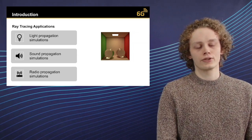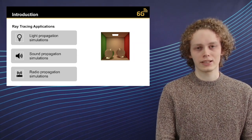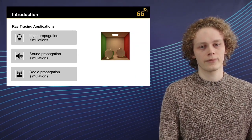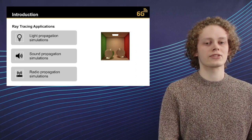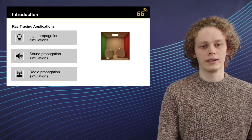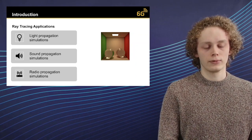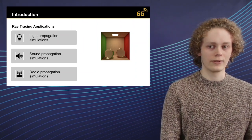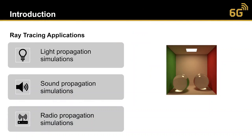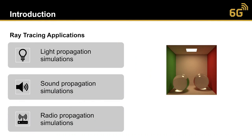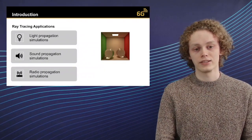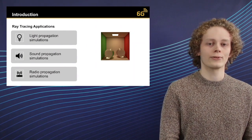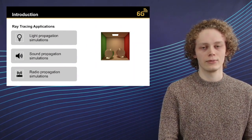First I'll give you a short introduction to raytracing and how it's utilized in different fields. The most famous application is in light propagation simulations — we have applications such as movies, and here on the right-hand side you can see the famous Cornell box, generated using raytracing, showing very realistic simulations. We can also use this for sound propagation simulations, and most relevant in this context is radio propagation simulations.